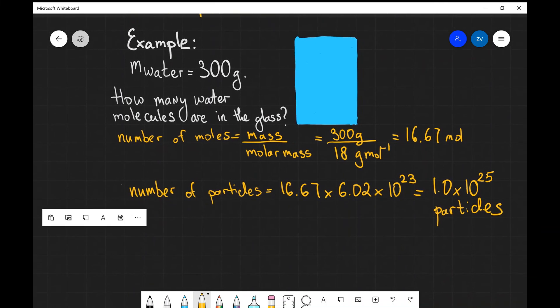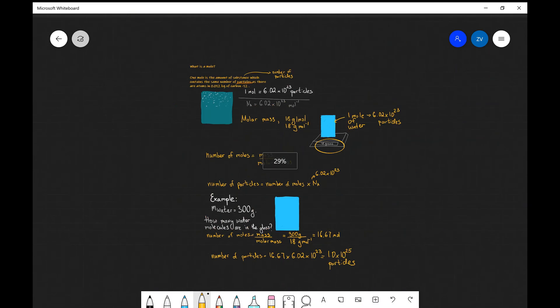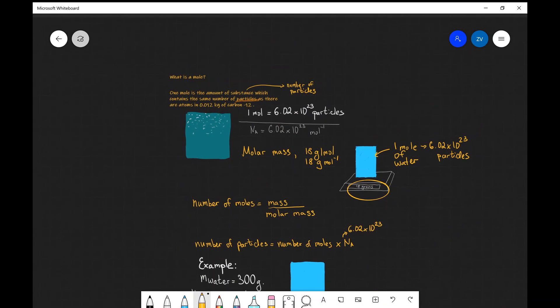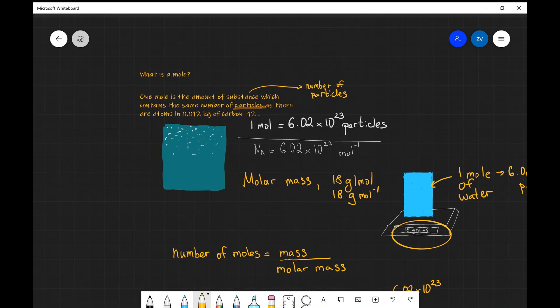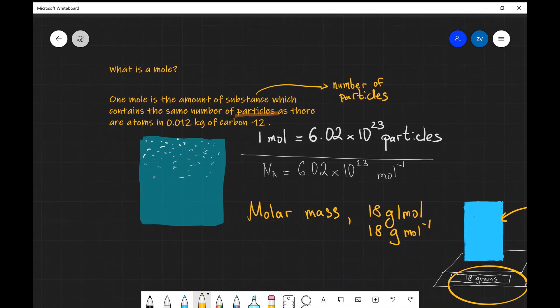This is quite a large number as we would expect for the amount of particles. Just to recap, what we've learned today is what is a mole. Contrary to popular belief, it's not just a tiny creature which lives on the ground, but also it's the amount of substance which contains the same number of particles that are atoms in 0.012 kilograms of carbon 12.